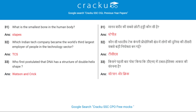What is the smallest bone in the human body? Stapes. Which Indian tech company became the world's third largest employer of people in the technology sector? TCS. Who first postulated that DNA has a structure of double helix shape? Watson and Crick.